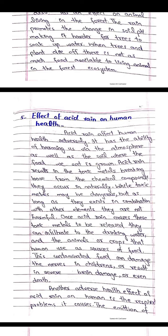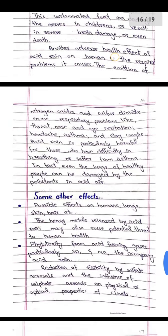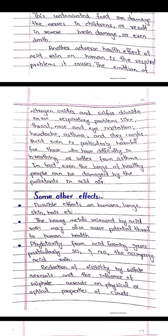This contamination can damage nerves in children and result in severe brain damage or even death. Another adverse health effect of acid rain on humans is the respiratory problems it causes. The emission of nitrogen oxides and sulfur dioxide causes respiratory problems like throat, nose, and eye irritation, headache, asthma, and dry cough. Acid rain is particularly harmful for those who suffer from asthma, and even the lungs of healthy people can be damaged by the pollutants in acid air.